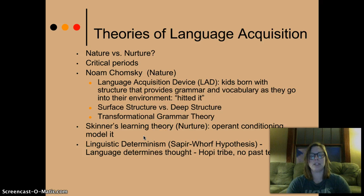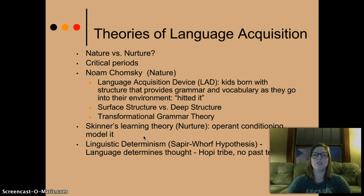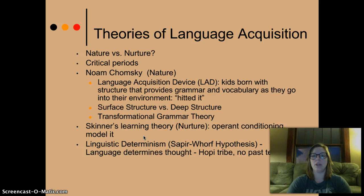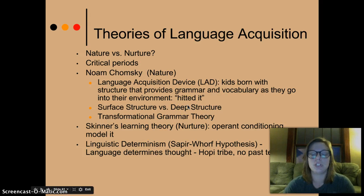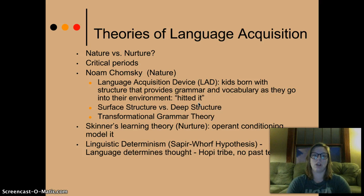Noam Chomsky argues nature through his language acquisition device — kids are born with a structure that provides grammar and vocabulary as they go into their environment. This is why children early in development say certain words and put certain things together even though they've never been said together by anyone else around them. No adult would ever say 'hitted it' to a child, so how did they think to put 'hit' with 'ed'? This is why Chomsky believes there is a nature argument.